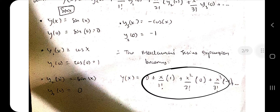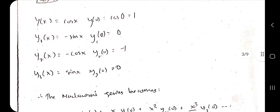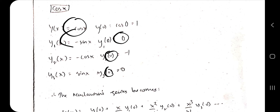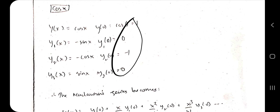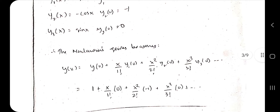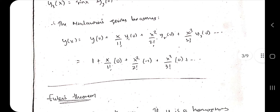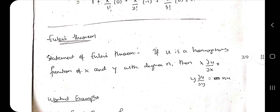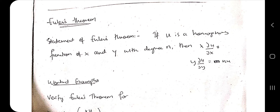The same procedure applies to cos x — start from cos x, keep differentiating, find the values of y(0) at each step, and substitute them into the main Maclaurin formula to get the final answer. This is a very important topic from an exam point of view.